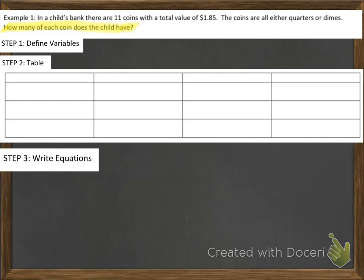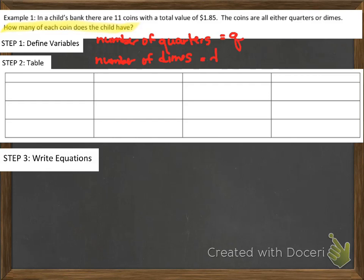What are the two coins discussed in this problem? There are quarters and there are dimes. So one variable is going to be the number of quarters that the child has, and the other variable is going to be the number of dimes that the child has. I'm going to make this the letter Q and this variable the letter D.